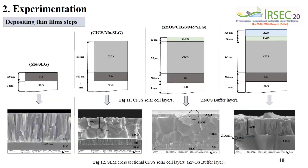The ZnO:S buffer layer has been prepared using a continuous rotation configuration. Sputtering deposition resulted in a columnar structure for the deposited material, which is clearly seen in Figure 12. The annealing process has strongly affected the absorber CIGSe layer, showing a similar morphology as well as an almost comparable composition of the ZnO:S and AZO layers.